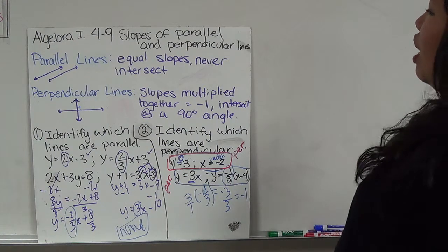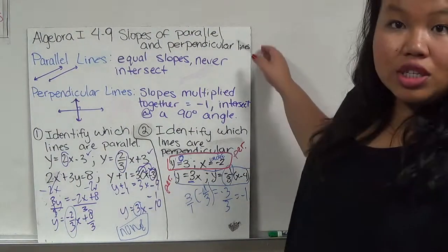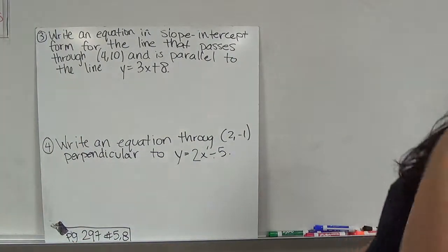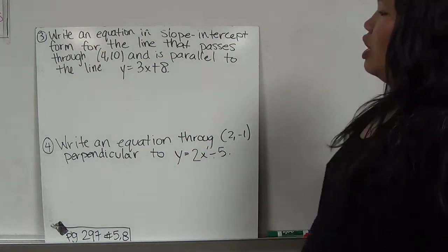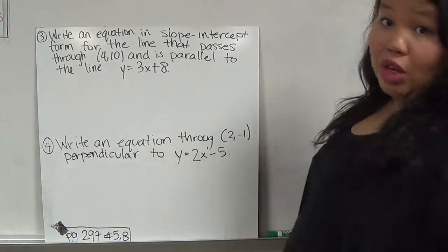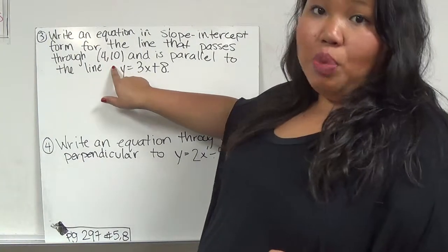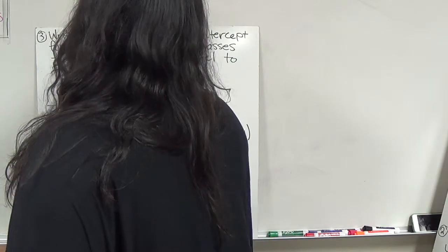So these two are perpendicular, and these two are perpendicular. Go ahead and write this down. I have one more board for you, so write it down, pause it if you need to. Number 3 is telling us to write an equation in slope intercept form for the line that passes through 4, 10 and is parallel to the line y equals 3x plus 8.